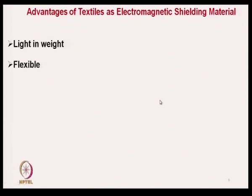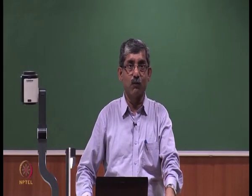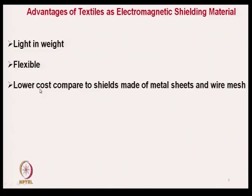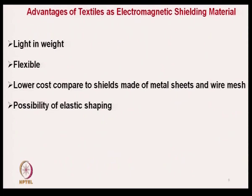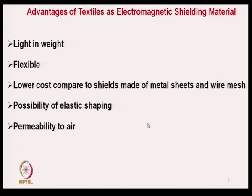The basic advantages of textiles as electromagnetic shielding materials are that they are lighter in weight, very flexible so they can be used in different applications, they are moldable, low cost compared to other shielding materials, and offer the possibility of elastic shaping. They can be shaped to cover different complex instruments of complex shapes. We can even wear fabrics made of electromagnetic shielding material, and they are permeable in nature so that proper comfort can be imparted.